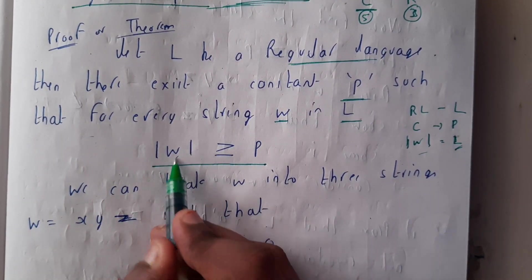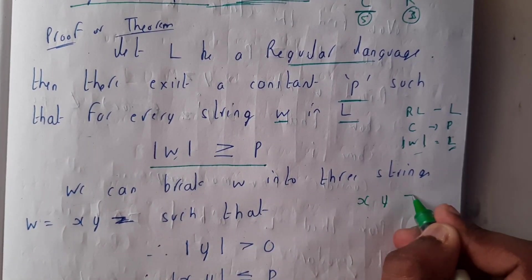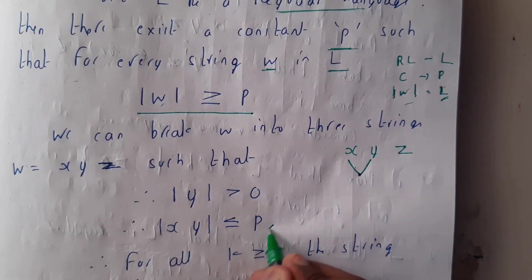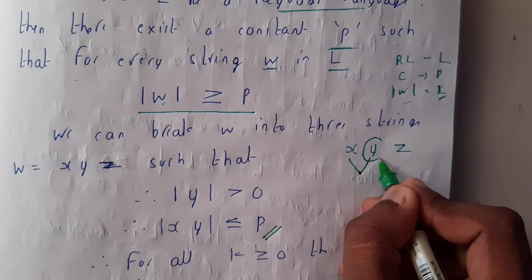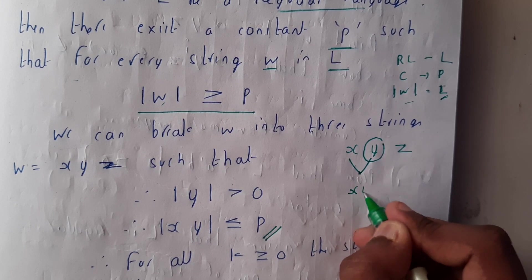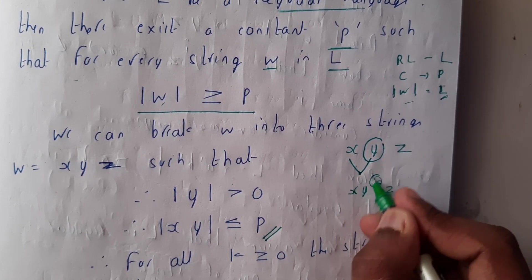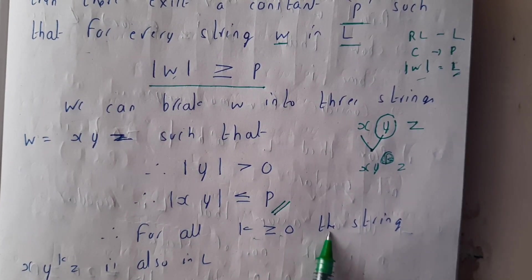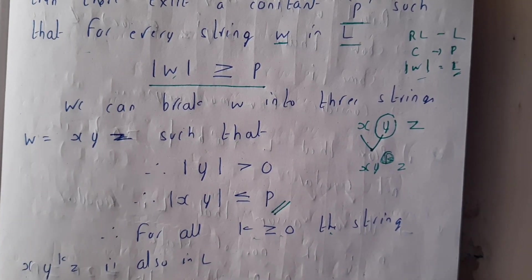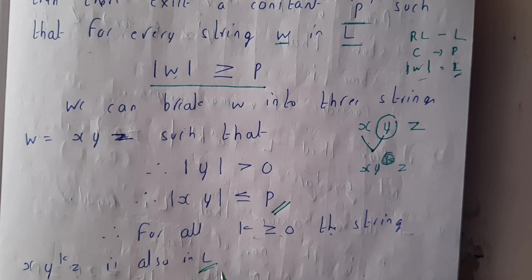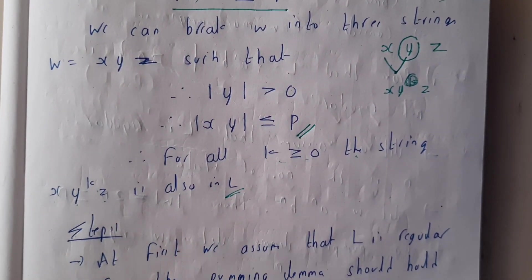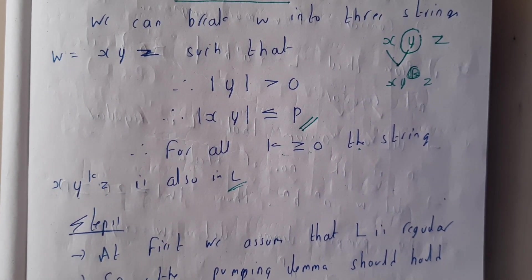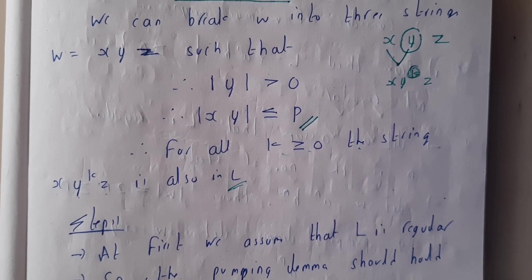We break the string w into three parts: x, y, z. The combination of x and y should be less than or equal to p, and |y| should be greater than zero. For all k greater than or equal to zero, the string x y^k z is also in L. This is the basic introduction to Pumping Lemma.